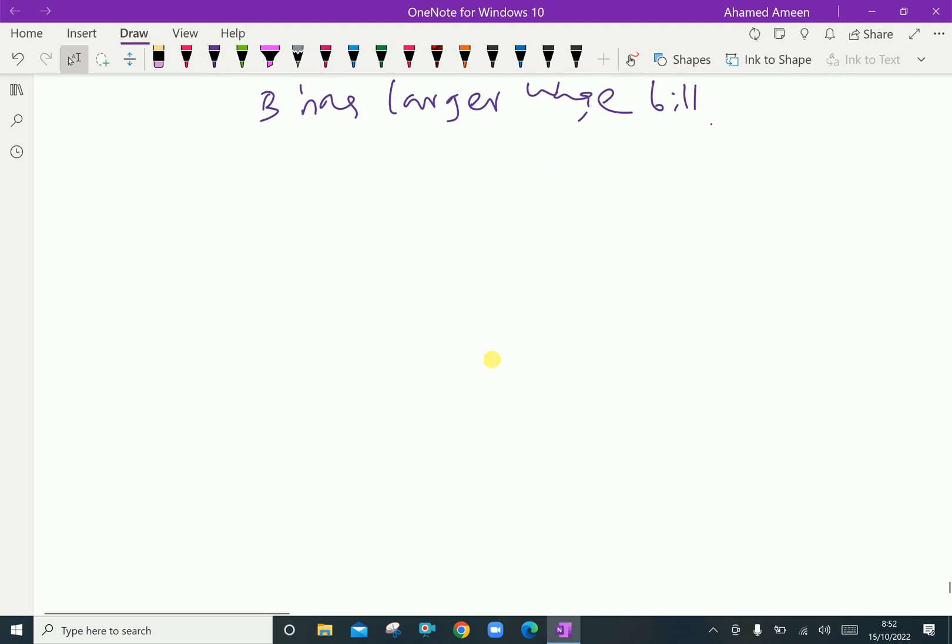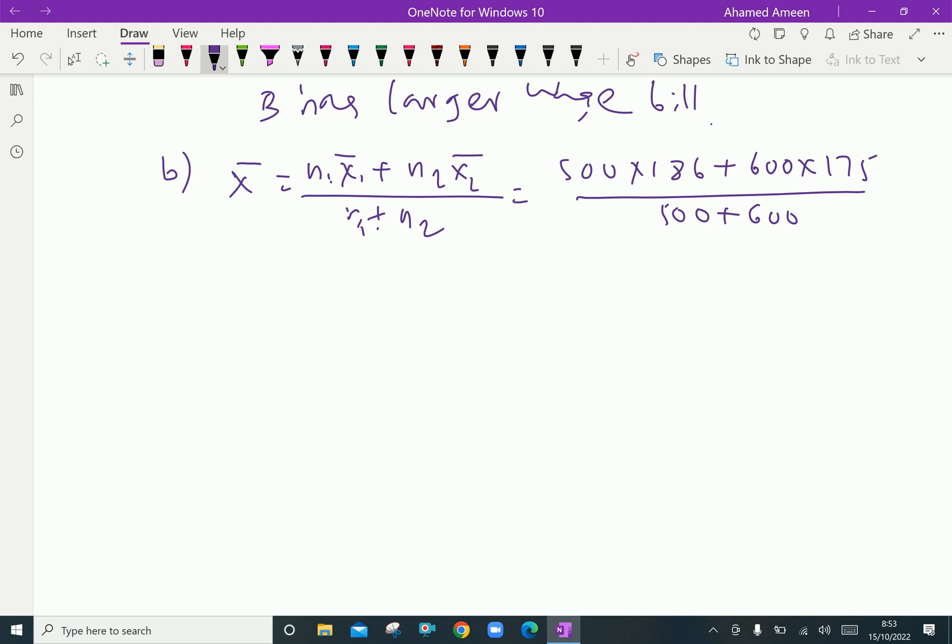Second question: the combined mean X̄ is (N1 X̄1 + N2 X̄2) / (N1 + N2), which equals (500 × 186 + 600 × 175) / (500 + 600), which gives Rs. 180.